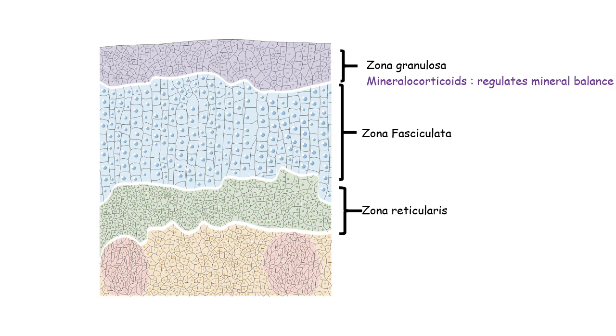Zona glomerulosa secretes mineralocorticoids which regulate mineral balance, specifically sodium-potassium balance in the blood. The key hormone secreted from zona glomerulosa is aldosterone. Zona fasciculata gives rise to glucocorticoids which regulate glucose metabolism. Key hormones secreted from zona fasciculata are cortisol, cortisone, or corticosterone.